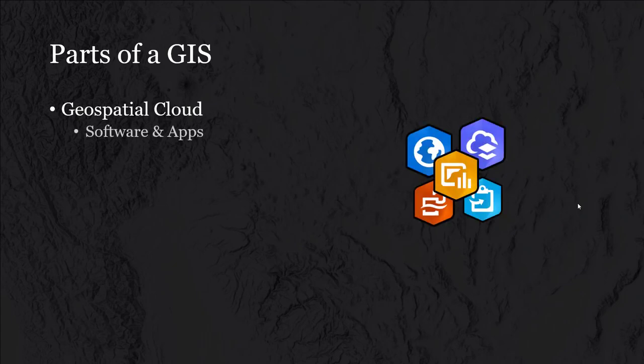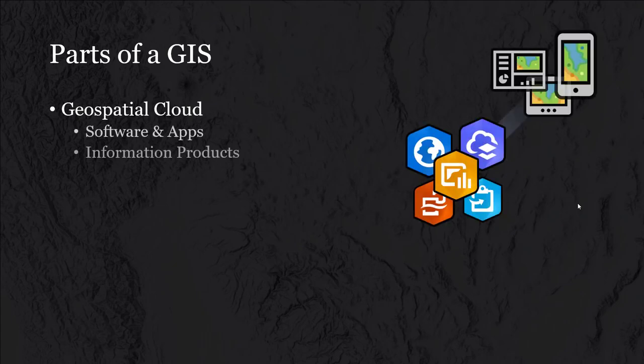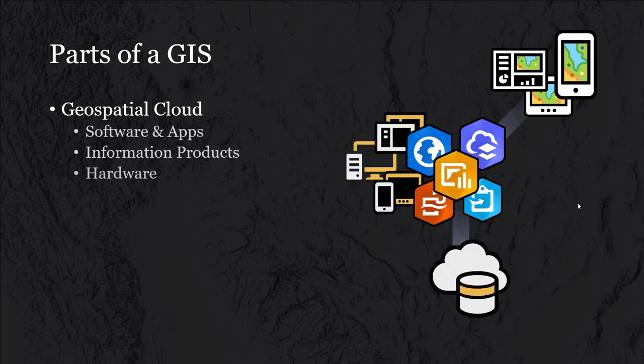The first component I wanted to mention is the geospatial cloud, or the web. There are a couple of different components that can live in or exist as part of web or cloud services. The first major component of GIS is the software applications.